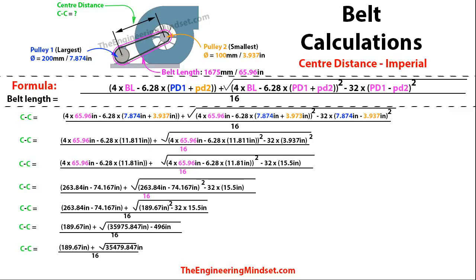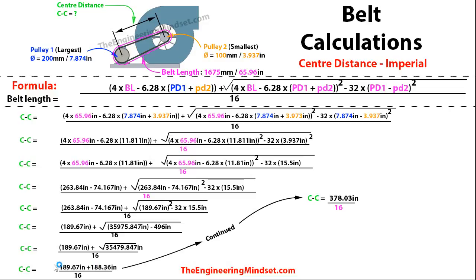We subtract those two numbers, then take the square root of the result. Adding those two numbers together gives 378.03 inches over 16, and dividing gives a center distance of 23.6 inches. As you can see, it wasn't as complex as it might have first looked. I would highly recommend doing this calculation in Excel or a similar spreadsheet rather than by hand, but if you're in an exam, this is the method — I've just written it out in long form so everyone can follow each step.